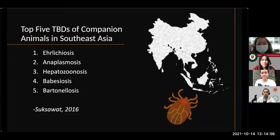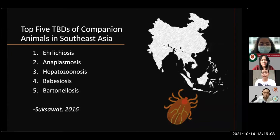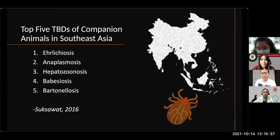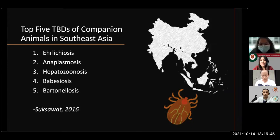In companion animals in Southeast Asia, the top five tick-borne diseases are: ehrlichiosis at number one — which we also found to be the leading tick-borne disease affecting dogs in our country — followed by anaplasmosis, hepatozoonosis, babesiosis, and bartonellosis. Bartonellosis is considered present in Southeast Asia but not much is known here in the Philippines, making it an emerging concern. Although we've heard of Bartonella henselae in cats, tick-borne Bartonella including in dogs is not yet well understood here.